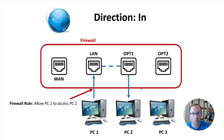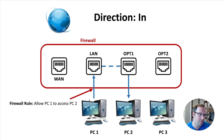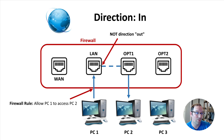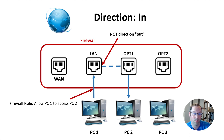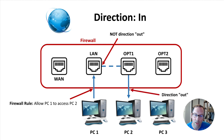Sometimes people want to put the rule on the other side. With direction in, you actually want to put the rule where the source is — where PC one is. A lot of people might think direction out means it's coming out of the LAN interface, like PC one's traffic going in and then coming out of LAN. But if you put direction out on the rule, it's actually going to catch it on the Optional One interface, not the LAN interface.